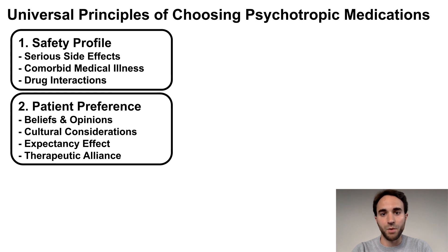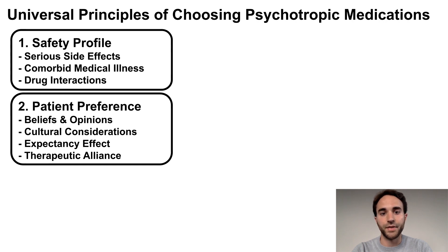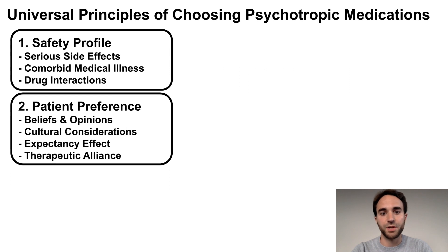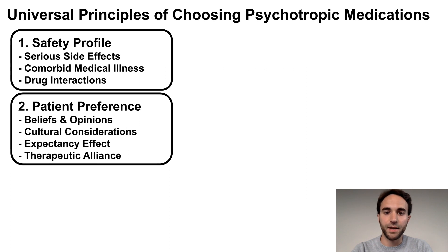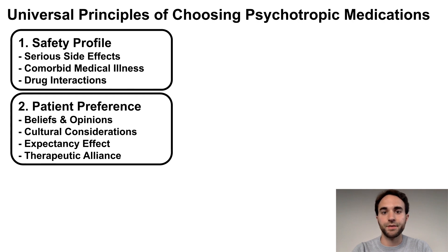There are two major reasons why this is important. First is the expectancy effect, which essentially means that if someone believes strongly that a treatment is going to help them, it is more likely to help them. Second is the concept of the therapeutic alliance and how this alliance impacts treatment adherence. In general, a person is more likely to listen to their doctor and adhere to the treatment they recommend if the person feels that they are being listened to, understood, and cared for. The simple takeaway is that if you are trying to decide between two medication options that are approximately the same in terms of safety and effectiveness, and the patient has a preference between one or the other, then choose the medication that the patient prefers.